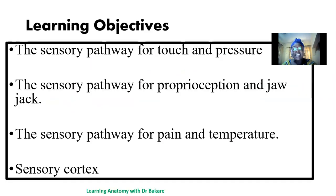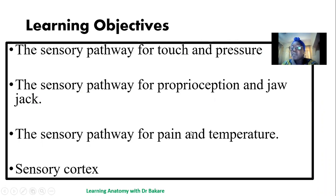These are our learning objectives. Going through this lecture, we should be able to describe the sensory pathway for touch and pressure, the sensory pathway for proprioception and jaw jerk, the sensory pathway for pain and temperature, and lastly, we should be able to describe the sensory cortex where this sensation is perceived.